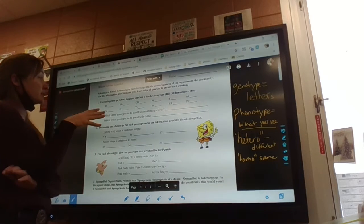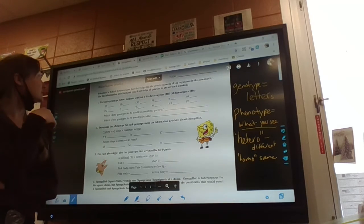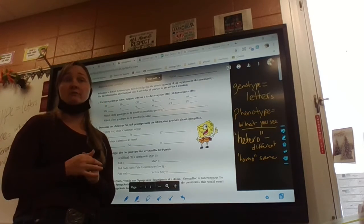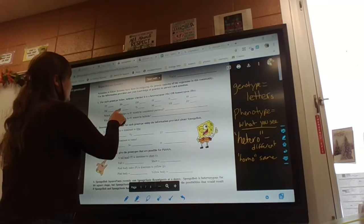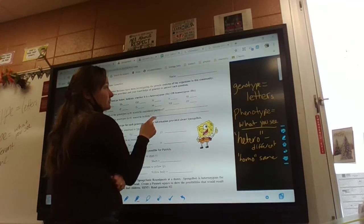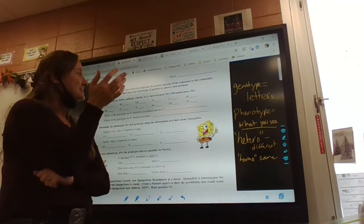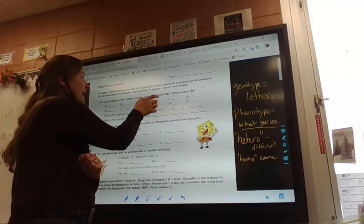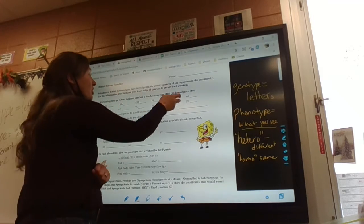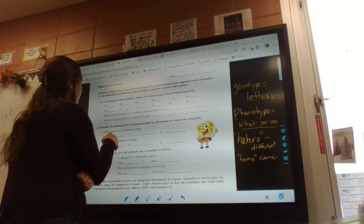When you get to the SpongeBob worksheet, you're going to look for genotype. You have to read the directions. The genotype is given and you indicate whether it's heterozygous or homozygous. Instead of writing out the word hetero or homo, you can just write 'he' or 'ho'. Remember, hetero means they're different - it'll be a mix of capital and lowercase. Homo means same - either little little or big big. So you're just going to write 'he' or 'ho' wherever it is.